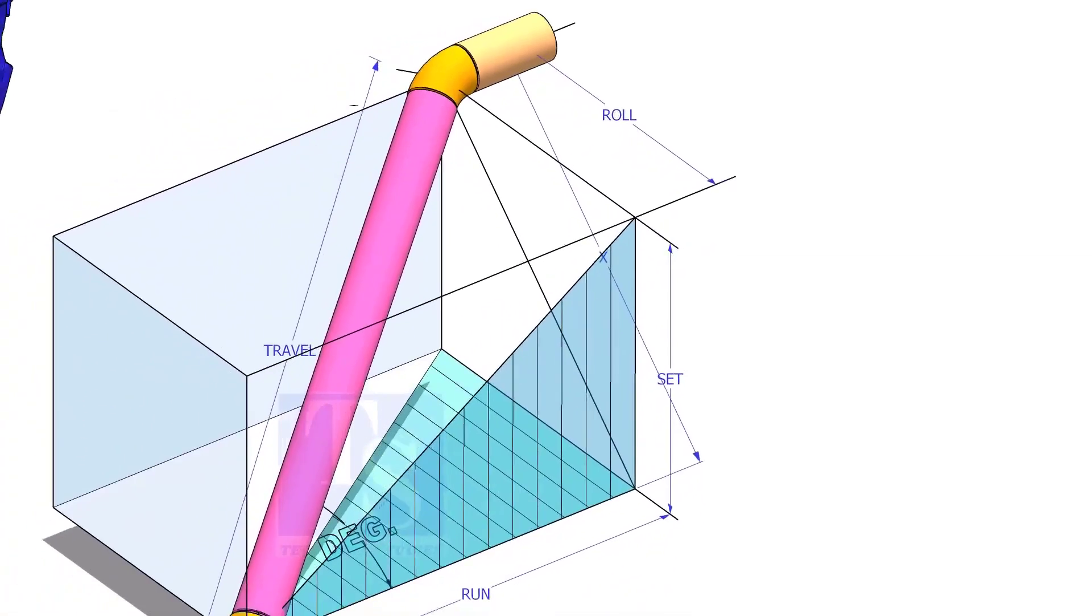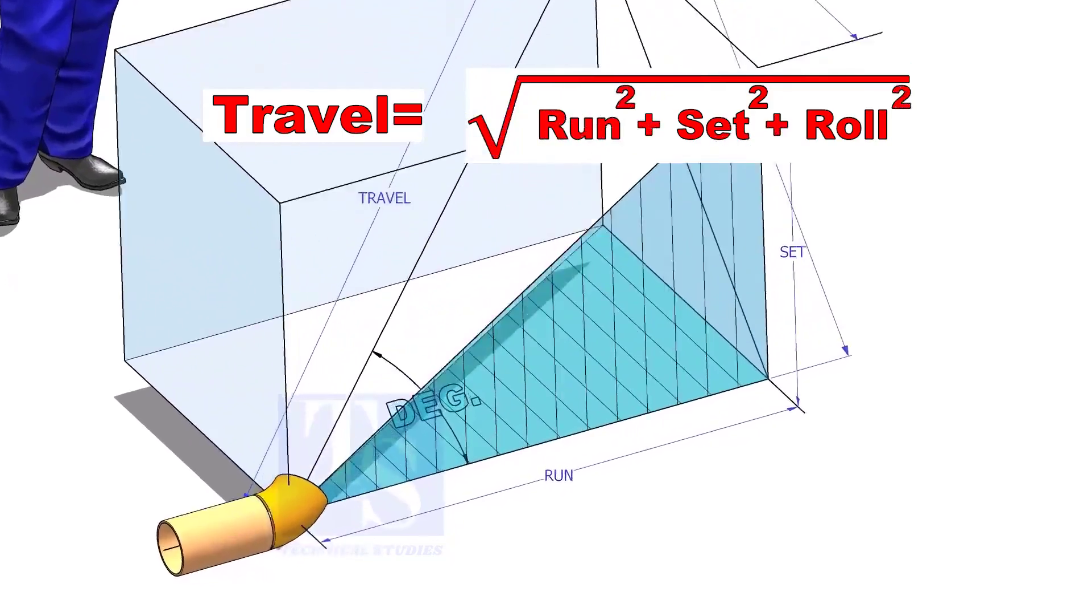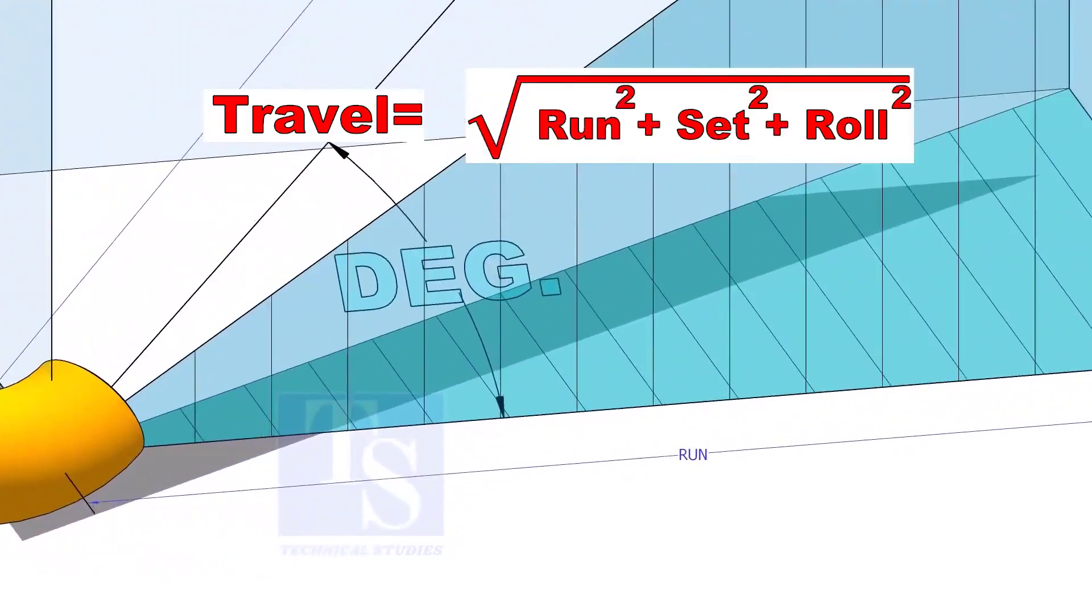The formula to calculate the travel length is root of the sum of the run, set and roll.